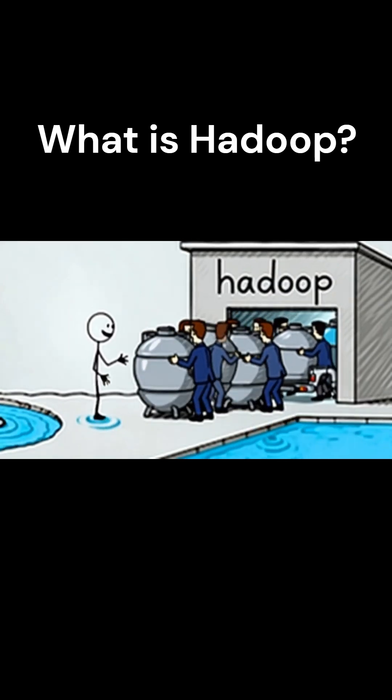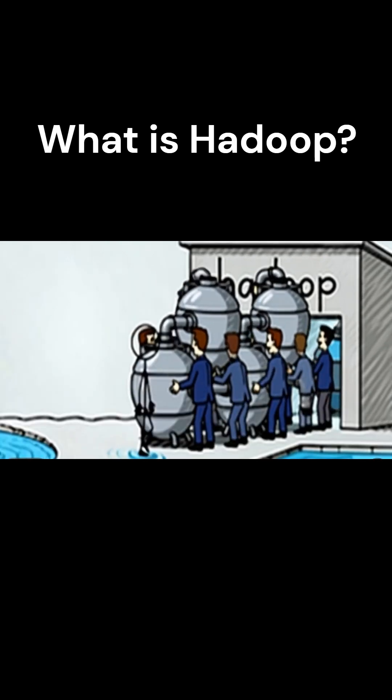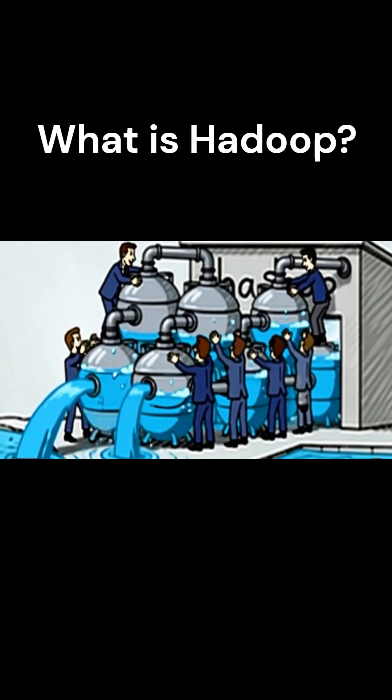The first layer is HDFS. This is where the data goes. HDFS takes your files, breaks them into big blocks, and spreads those blocks across different machines.